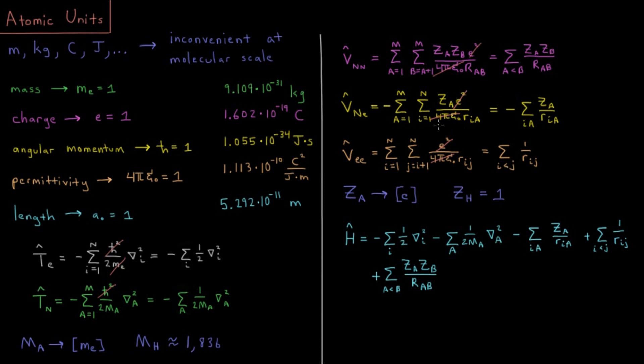We get the e squared cancels, 4 pi epsilon naught cancels, and you're left with negative sum. And in this case, if we're summing fully over both of these variables, rather than having some pairwise sum, I might just list both of those variables in that summation. So I have negative sum Ia, za over ria, number of protons in nucleus A, divided by distance between electron I and nucleus A.